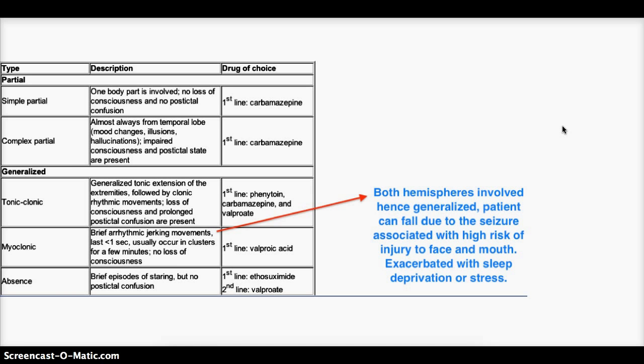Coming to generalized, here it's divided into three categories: tonic-clonic, myoclonic, and absence. Tonic-clonic will be more of the motor. It's bilateral and more motor symptoms. It's generalized tonic extension of the extremities, and it's followed by clonic rhythmic movement. Tonic is when the patient is very stiff, and clonic when the patient is jerking. Loss of consciousness and prolonged post-ictal confusion are present. The first line for this is phenytoin, carbamazepine, and valproate. We will be discussing about management in more detail.